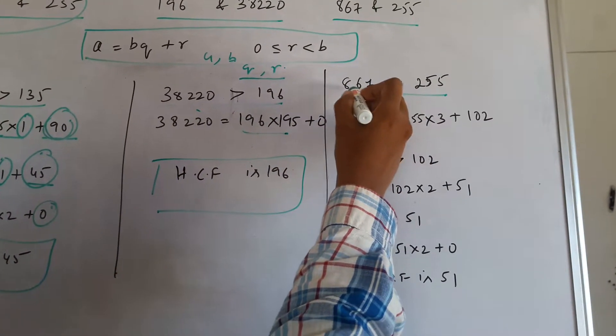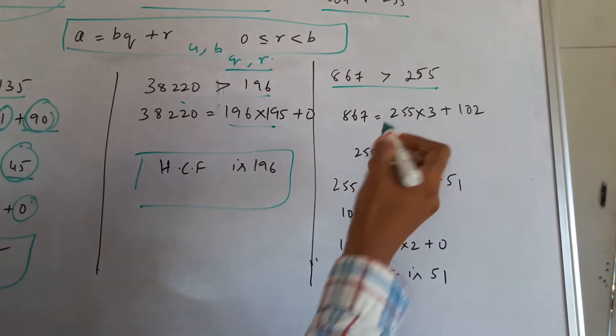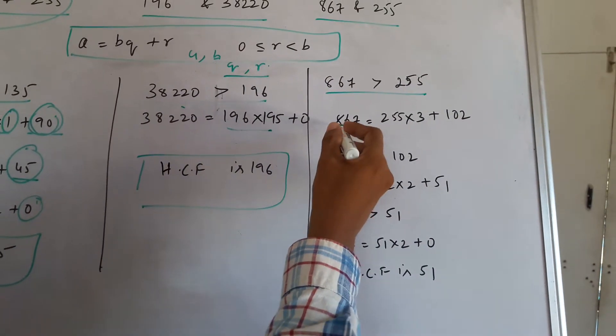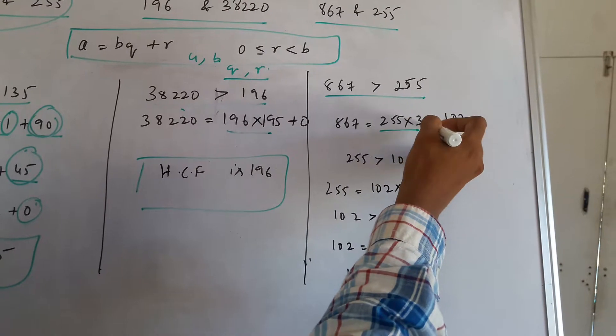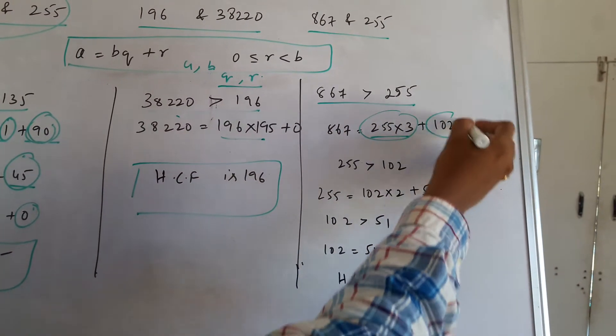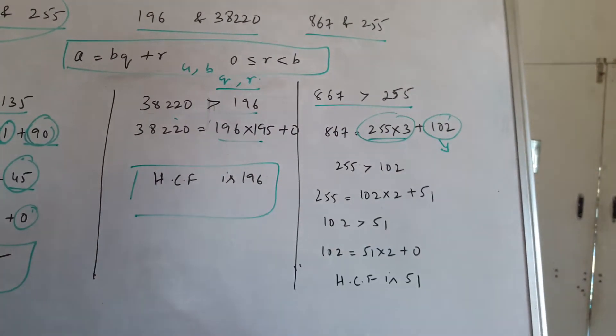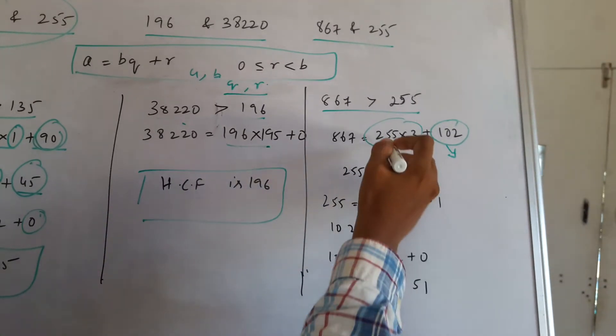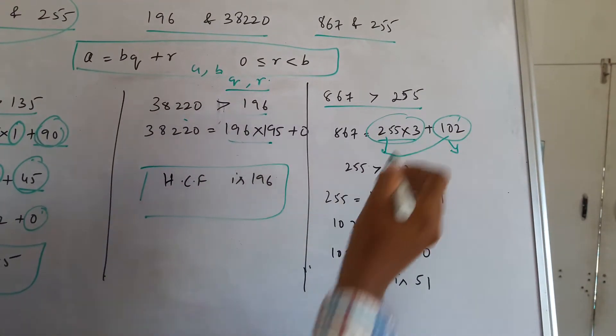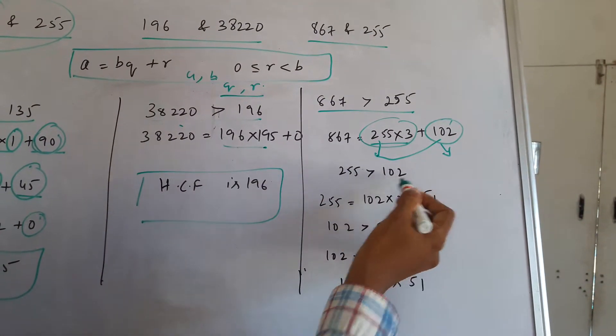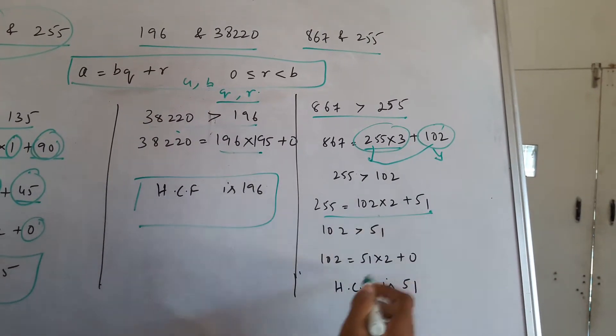Now if you look at the third problem, 867 is greater than 255. If you find that, it is a multiple of 3 plus the remainder, which is 102. Again we have these two, 255 greater than 102. If you have the multiple of this and the remainder being 51.